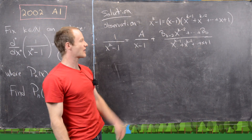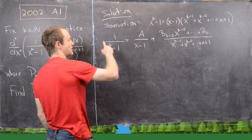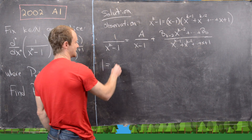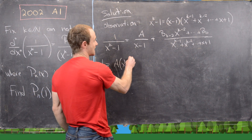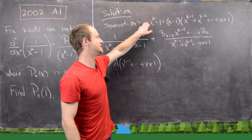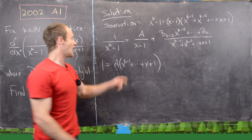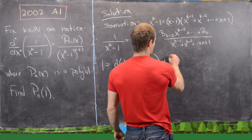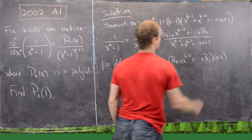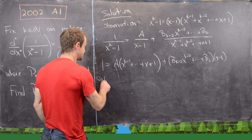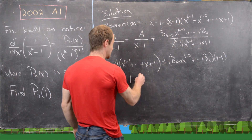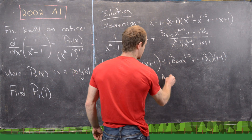We can figure out what 'a' is pretty easily by multiplying the entire equation by x^(k-1). That gives us 1 on the left-hand side, then a times (x^(k-1) plus ... plus x plus 1), and the remaining terms give b_(k-2) x^(k-2) down to b_0, times (x minus 1). Setting x equal to 1 zeros out that last term and leaves us with 1 equals a times k, so a equals 1/k.